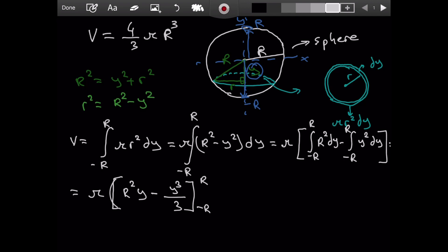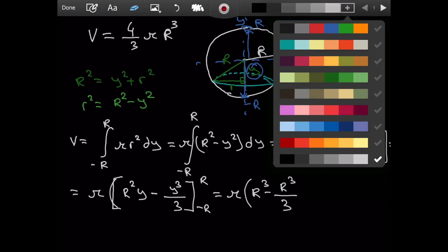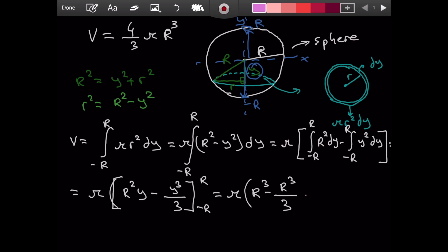So, we got this. And now, we are allowed to substitute. Let's do it. We have pi. When we put r for y, we will get r cubed minus r cubed divided by three. And then a minus. This minus is incredibly important. This comes from the fundamental theorem of calculus. This is incredibly important.